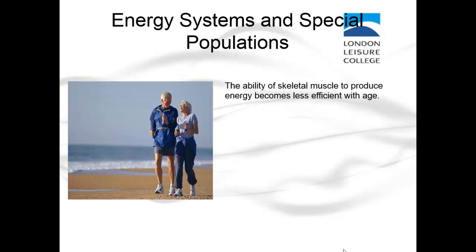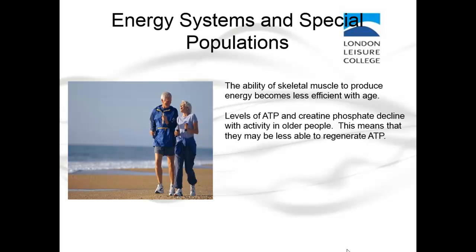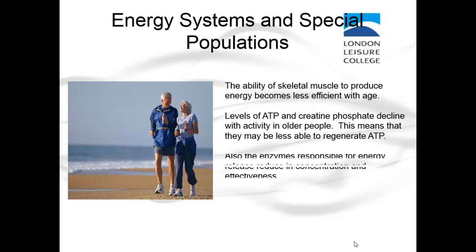The ability of skeletal muscle to produce energy becomes less efficient with age. Levels of adenosine triphosphate and creatine phosphate decline with activity in older people, meaning they may be less able to regenerate ATP. The enzymes responsible for energy release also reduce in concentration and effectiveness, leading to reduced energy production.